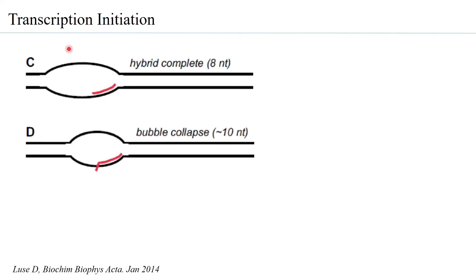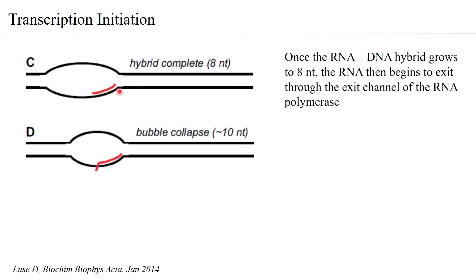As about eight nucleotides are added to form a longer RNA, the upstream end remains the same while the bubble opens only at the downstream end. When the RNA-DNA hybrid becomes greater than eight nucleotides, the RNA actually enters the exit channel of RNA polymerase 2.